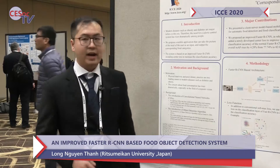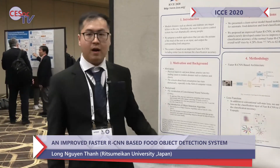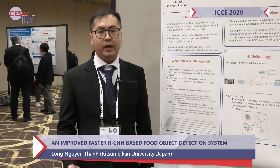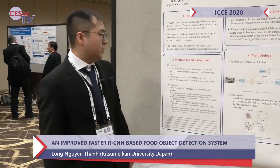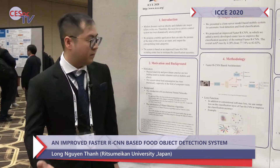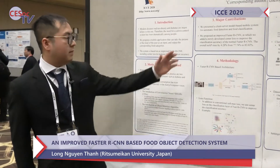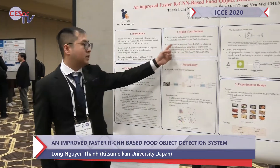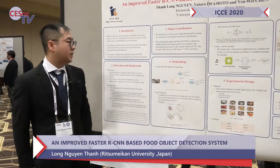Our system is based on Faster R-CNN, including center loss to improve the classification accuracy. As you can see here, this is my improved Faster R-CNN architecture. I have proposed a client-server model based mobile system for automatic food detection and food classification.